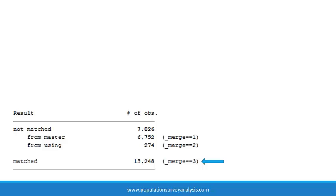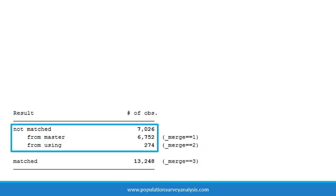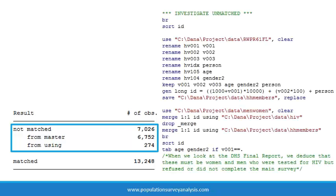The output window tells us that 13,248 men and women had an HIV test result, there were 6,752 men and women without an HIV test result, and 274 HIV results for whom we have no other survey information. Before moving on, it is essential to understand why we have any unmatched IDs. I investigated these unmatched records using the browse statement by comparing the merged dataset to the household roster dataset and by reading the final DHS report to check the response rates for these different datasets.